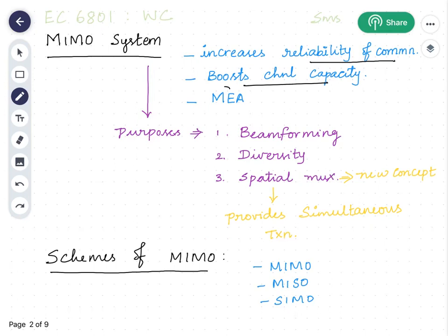In the MIMO system, you can also call it a multiple element antenna system. Multiple element antennas are used to achieve beamforming, diversity, and spatial multiplexing.